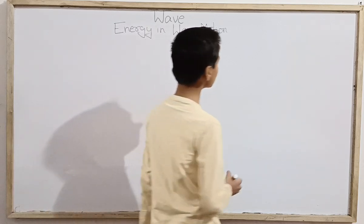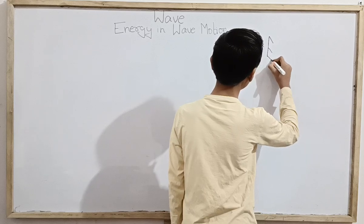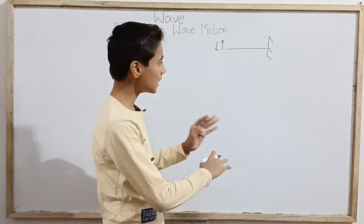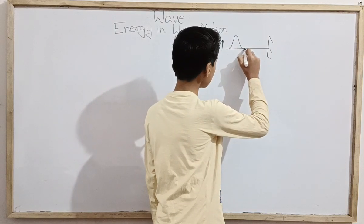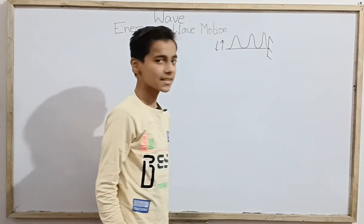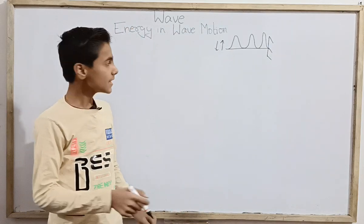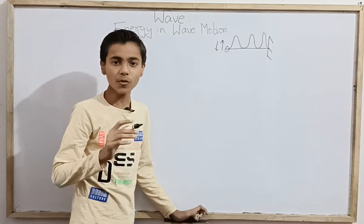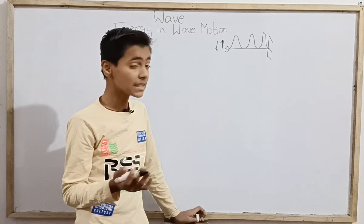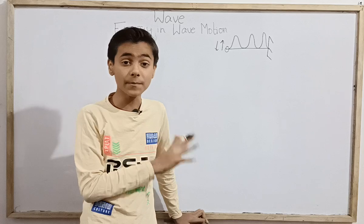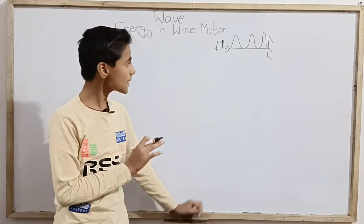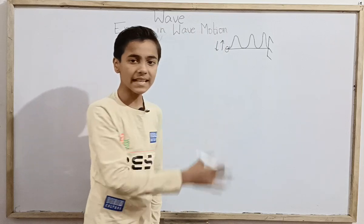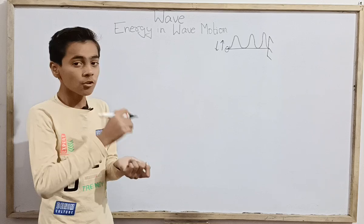Let's start with transverse waves. We have a rigid wall with a string tied to it, and we move it in up and down motion in SHM so multiple waves travel. If we focus on it, we are putting force on it when we are shaking it. Here there is force and displacement, which means we are doing work on it and transferring energy into it. Then this portion puts force on the next portion and transfers energy along the string.